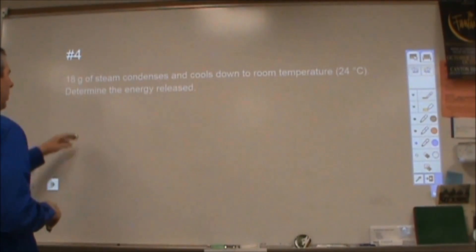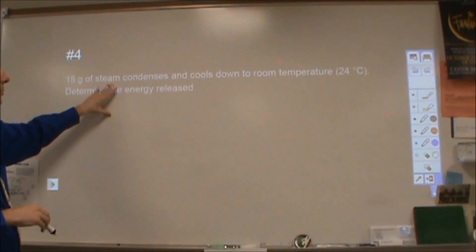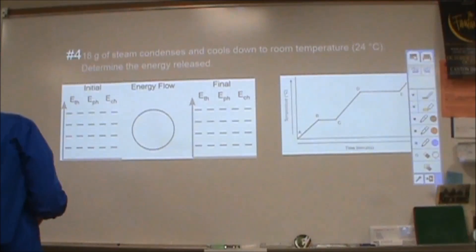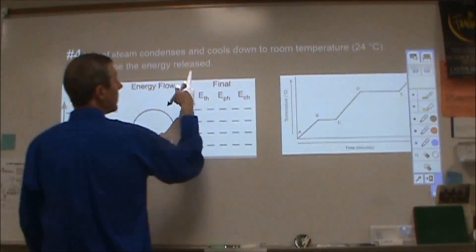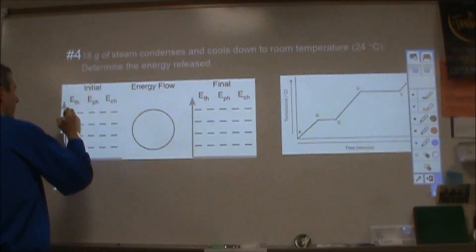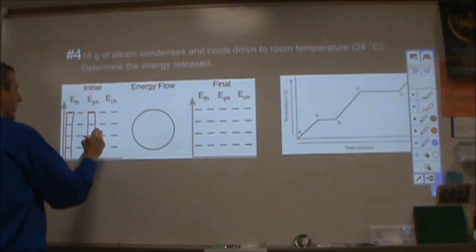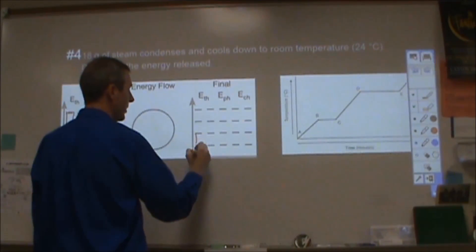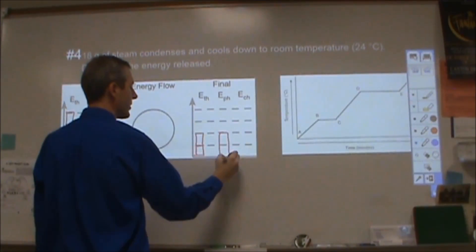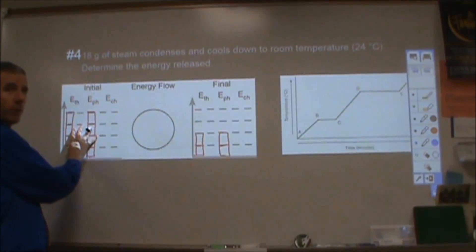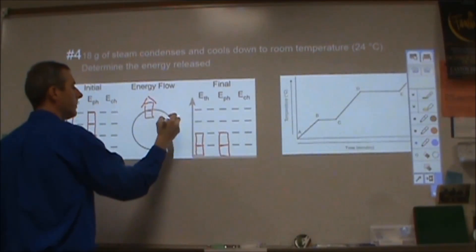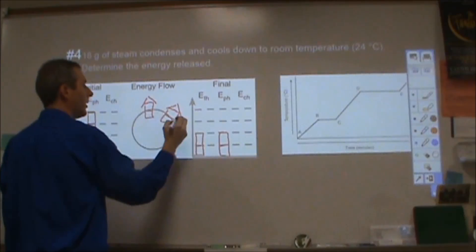Number four. 18 grams of steam condenses, cools down to room temperature, determine the energy released. So for our LOL diagram, we have steam, so 18 grams, so we're at 100 degrees or more. For our steam, for our phase, we're at steam, so we're a gas state. So we start with four bars of each. It condenses down to room temperature. So room temperature we're going to assign to be two bars of thermal. And for phase, we're going to assign to be two bars of phase. So again, we've got two things going on. But this case is different than the previous three. In this one, I have two bars of energy leaving for phase. And I have two bars of energy leaving for thermal.